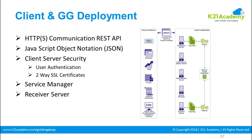Another component is the admin client. Previously in GoldenGate you would connect using the GGSCI prompt. The admin client does the same job in microservices architecture — you use it to connect to GoldenGate. Using the admin client, you connect via APIs to the distribution server, trail files, performance metrics server, administration server, service manager, and receiver server.